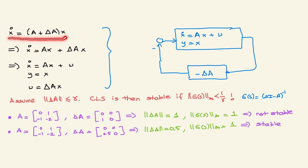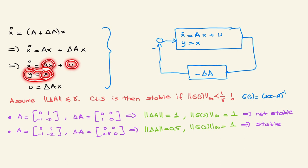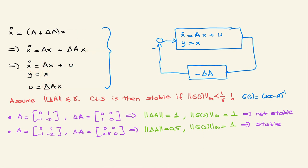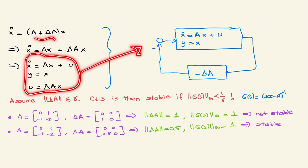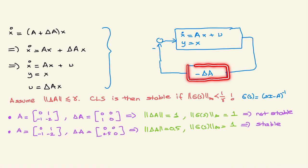For example, consider x-dot = (A + ΔA)·x, where A is known and ΔA is unknown. I apply the small gain theorem to find a sufficient condition for stability by rearranging as x-dot = A·x + u, y = x, where u = ΔA·x. This lets us represent the uncertain system as a block diagram with a known linear part and a feedback perturbation.